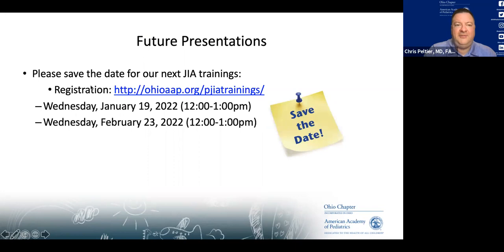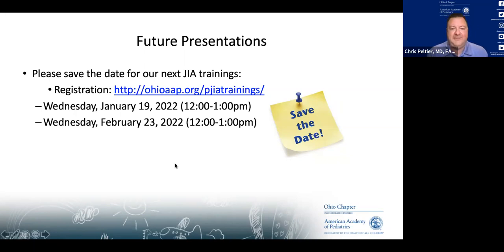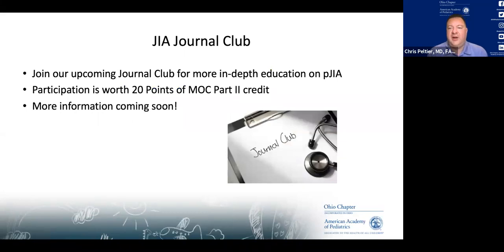Upcoming webinars: this is a series of four — this was the second. On Wednesday January 19th, we'll go over treatment options for inflammatory arthritis. Then in February, we'll have a multidisciplinary panel with Dr. Huggins, likely a psychologist, another rheumatologist, and a patient discussing chronic pain. We hope you can join us. There's also an upcoming journal club with 10 articles spanning lots of different topics, including one on hypermobility, where you can get 20 points of MOC Part 2 credit.